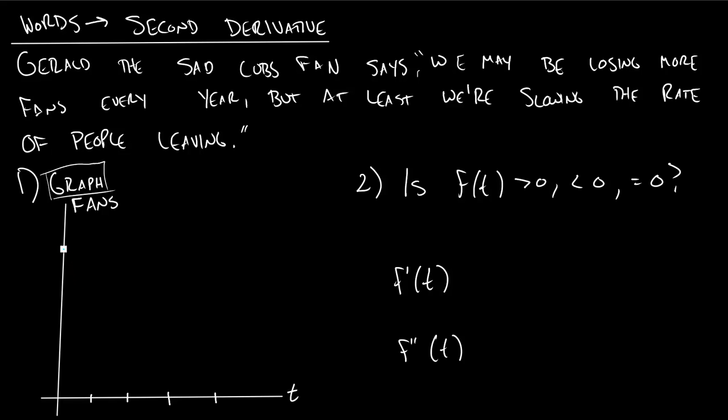So time equals zero, maybe they had something like a million fans, way up here. And then when they started stinking, whenever that was, whenever Moises Alou and Steve Bartman had that scuffle, they lost a ton of fans. So that year, they lost a bunch.